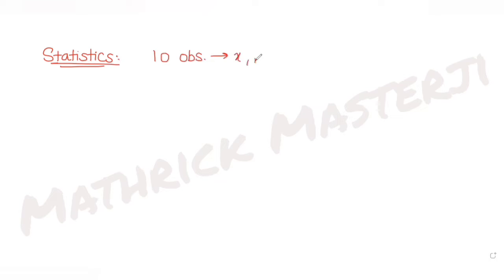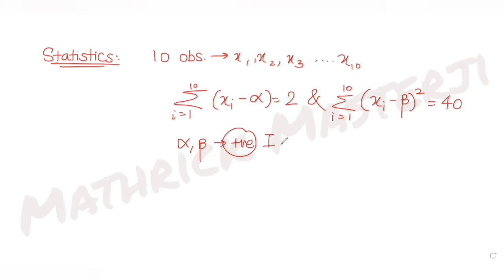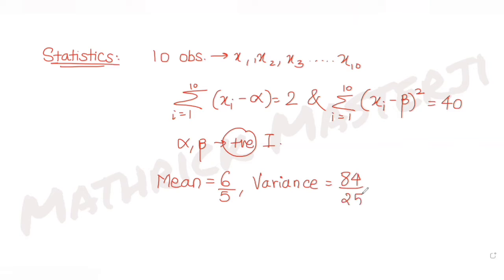The question tells us: consider 10 observations x1, x2, x3 till x10 such that summation of i equals 1 to 10 of (xi minus alpha) is equal to 2, and the other condition tells us summation of i equals 1 to 10 of (xi minus beta) squared equals 40, where alpha and beta are positive integers. The mean and the variance of the observations are given as 6/5 and 84/25 respectively.